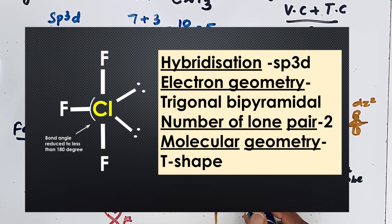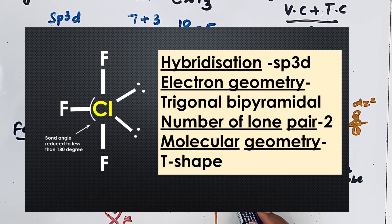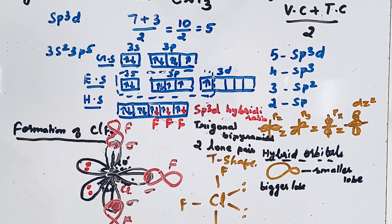So in CLF3, the hybridization is sp3d, the theoretically expected geometry is trigonal bipyramidal, but due to two lone pairs the shape is distorted to a T-shape. Thanks for watching.